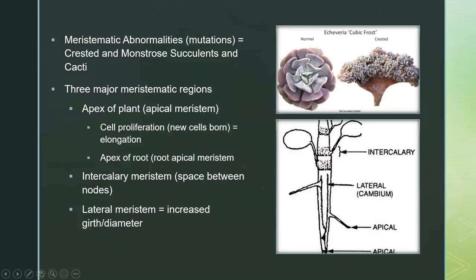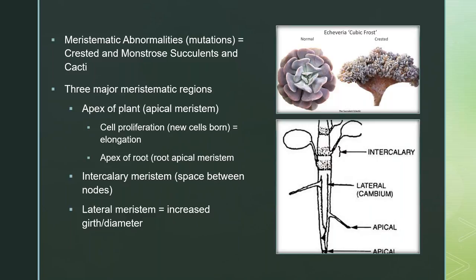Meristematic abnormalities are pretty cool. They can make things like crested saguaros — instead of a nice oval top, the cactus balloons out into a fan shape. Monstrous succulents are caused by the same thing: a mutation in the apical meristem that suddenly produces many apices across it. Instead of one meristem producing a nice ordered phyllotaxy or leaf arrangement, you get many little meristems producing growth simultaneously. These can be quite expensive, and people try to take that mutation and propagate more monstrous or crested succulents.